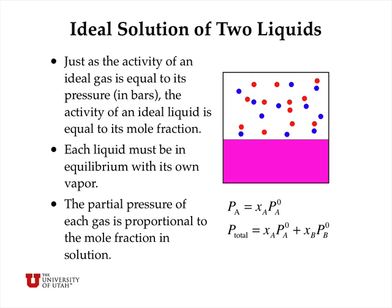So in an ideal solution of two liquids, just as the activity of an ideal gas is equal to its partial pressure in bars, the activity of an ideal liquid is equal to its mole fraction, and each liquid must be in equilibrium with its own vapor pressure. The partial pressure of each component is then proportional to the mole fraction of that component in solution. So Pa is equal to Xa times the equilibrium partial pressure of the pure liquid, and the total pressure of the mixture is just Xa·Pa plus Xb·Pb.